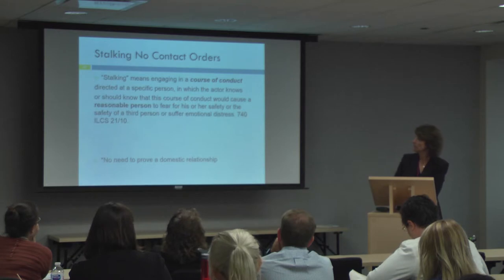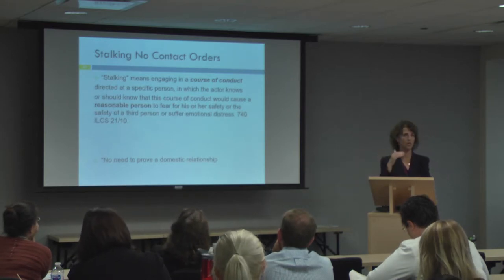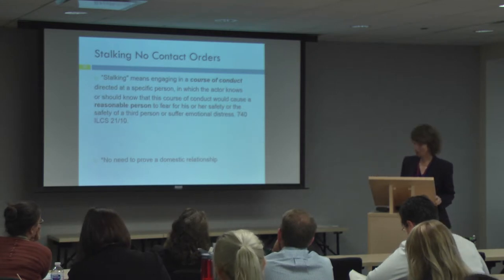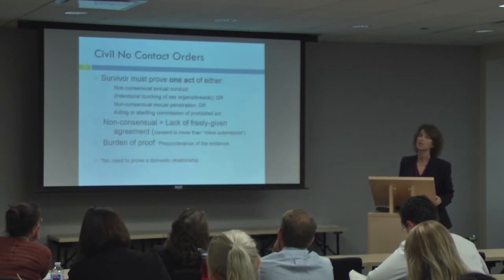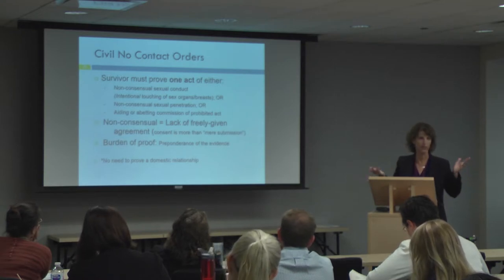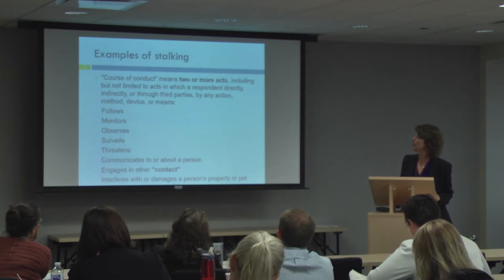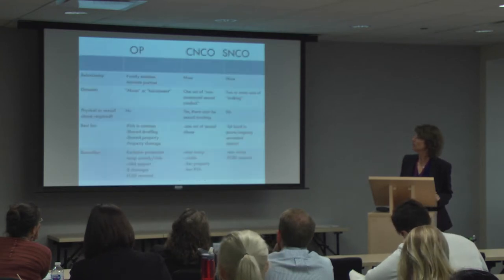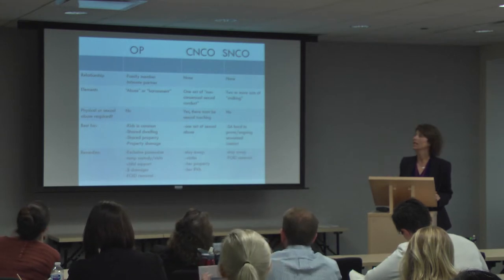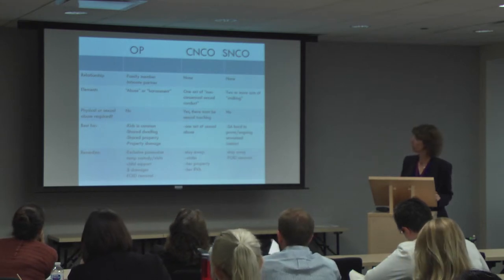Stalking must be a course of conduct — an isolated incident doesn't count; it has to be repeated acts of following, monitoring, or surveilling. A civil no-contact order, on the other hand, can be based on an isolated incident — you don't have to be sexually assaulted repeatedly; one time is bad enough. There are examples of stalking listed, and at the end there's a chart so you can have at a glance the order of protection, the civil no-contact order, and the stalking no-contact order compared.